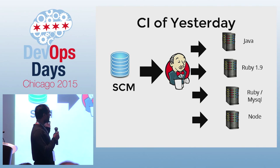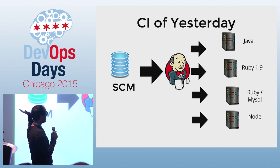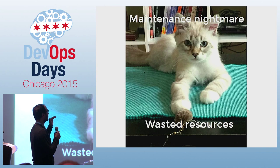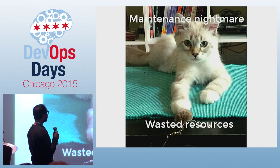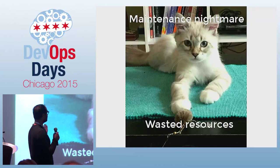This is how CI has traditionally looked. There would be a CI server which pulls from SCM and schedules jobs on one of these carefully tailored machines. All those machines are pets that demand constant attention and often end up wasting resources.